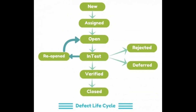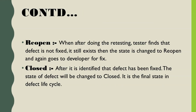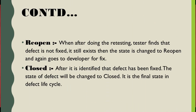The next comes the closed state. After the defect has been verified by the tester and it is identified that the defect is fixed, the state of the defect will be changed to closed, and it is the final state in the defect life cycle. Now comes the reopened state. The state of defect is changed to reopen if, after retesting, the tester finds out that the defect still exists and needs a fix.